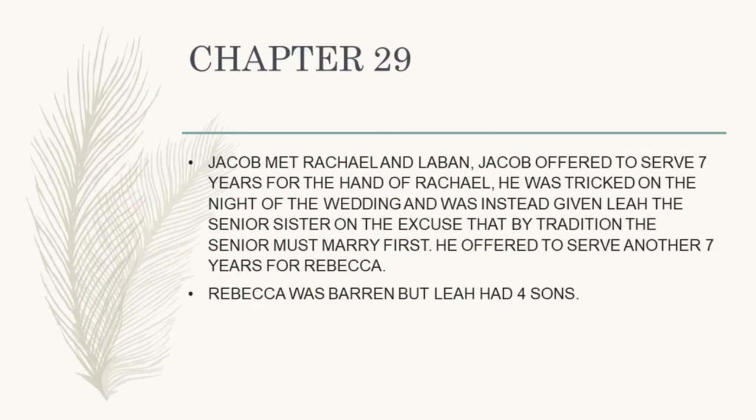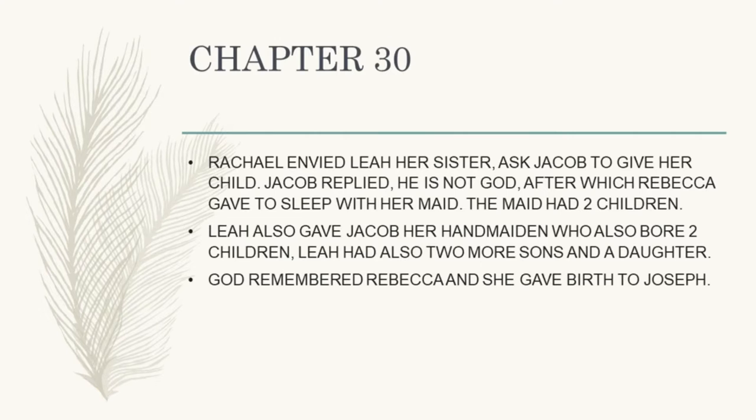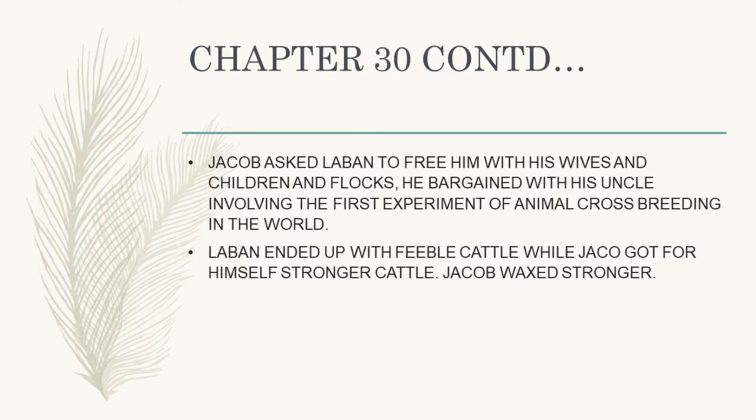Chapter 29: Jacob met Rachel and offered to serve Laban seven years for her, but he was eventually given Leah, the older sister. He then had to serve another seven years. Chapter 30: Rachel envied Leah — Rachel was barren while Leah was giving birth. Eventually Jacob negotiated with Laban to leave with his children, using a kind of animal crossbreeding experiment so that he ended up with the strong cattle while Laban ended up with the feeble ones.